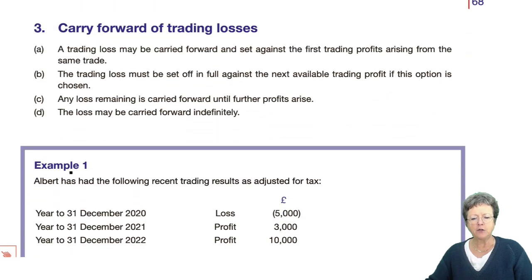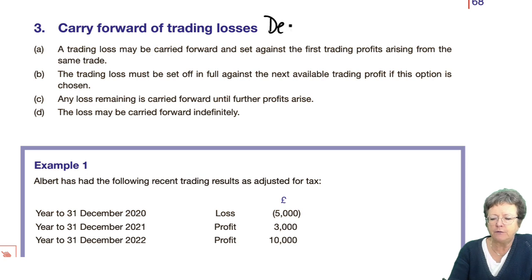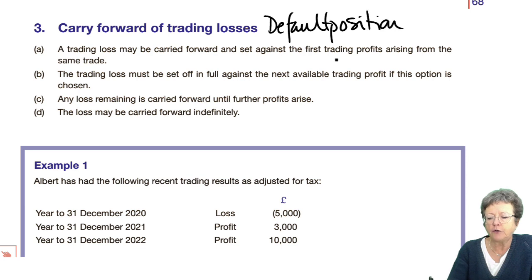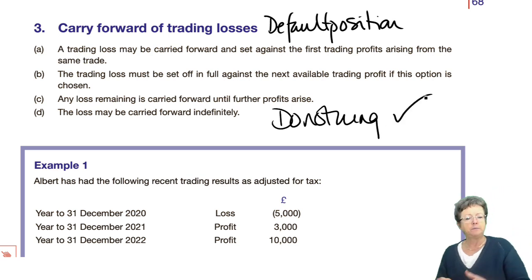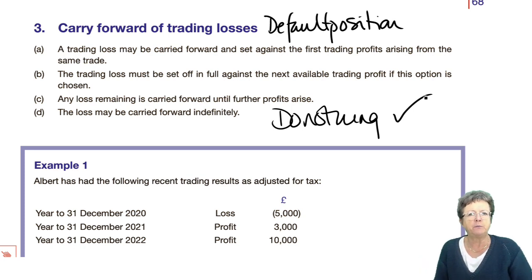So let's look at them one at a time and deal with each one. This is what's known as the default position. If you do nothing and don't make a claim, then this will happen. A trading loss may — you may decide you want to anyway — but it's called the default position because if you do nothing, this will happen.